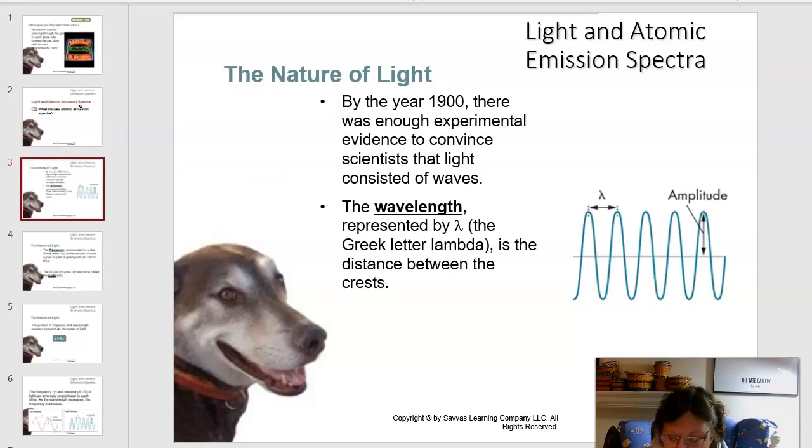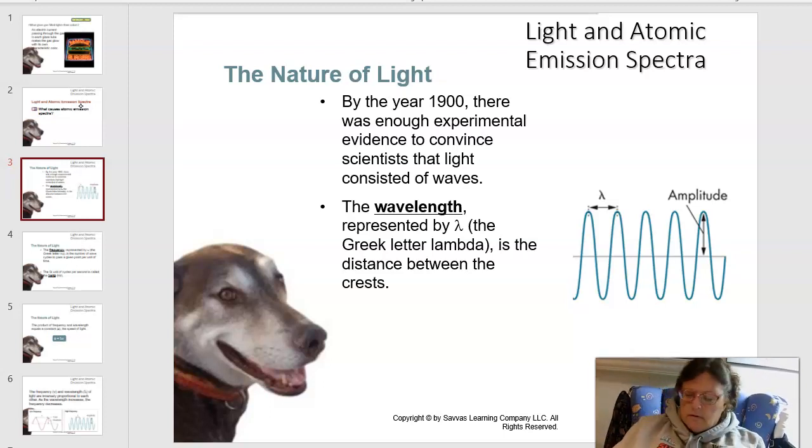Before we can answer that, we need to understand that light travels as waves. As light travels as waves, we have several vocabulary words. The most important one is wavelength. Wavelength is represented by the little Greek letter lambda. Lambda is the Greek letter for L and it looks like an upside down Y.